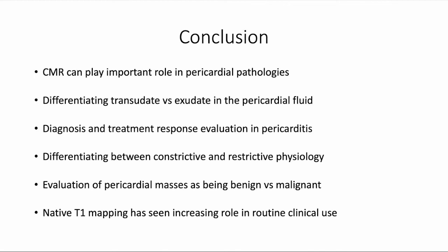In conclusion, cardiac MRI can play an important role in evaluating various pericardial pathologies. It is a very helpful modality to differentiate transudative from exudative effusions using latest parametric mapping images. It is a very good modality to diagnose and follow patients with inflammatory pericarditis, and very important to differentiate constrictive from restrictive physiology. We can also evaluate various pericardial masses and classify them as benign versus malignant so that appropriate treatment can be chosen. With the advent of native T1 mapping sequences, many more opportunities exist to explore how mapping sequences can help evaluate pericardial pathologies.